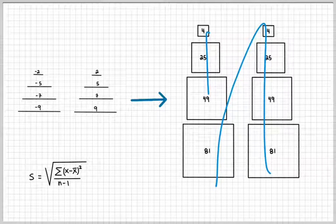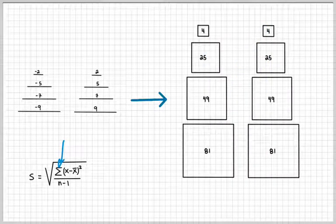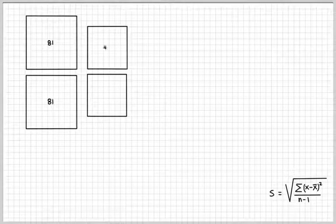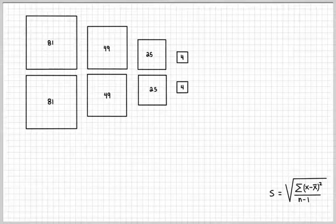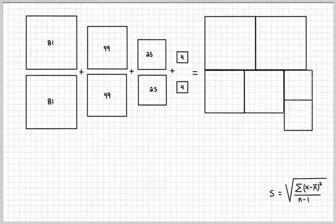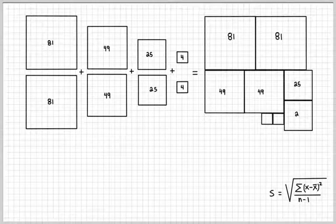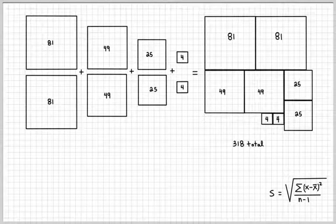So we have these boxes. What do we do? In the formula, it says we're going to add them up. And that's what we're going to do. And so we add up the boxes, and it turns out that the total area is 318.